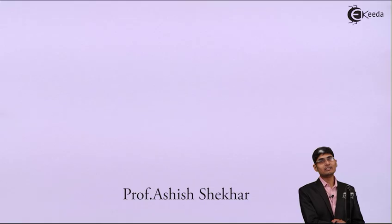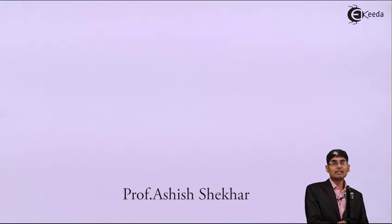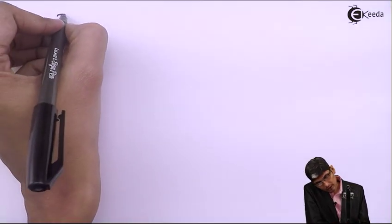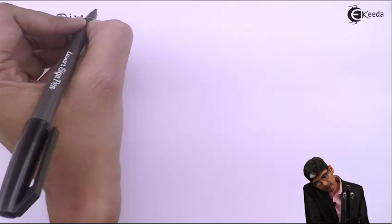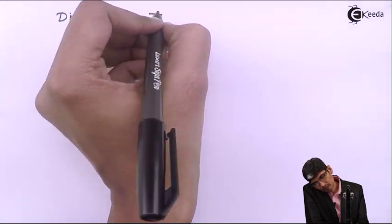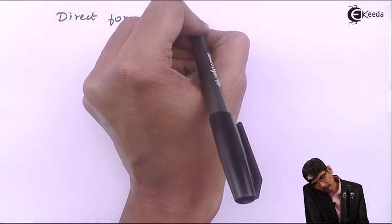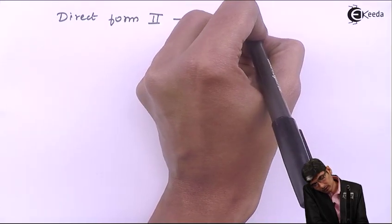Hello friends, let us see another form of IIR structure which we call as Direct Form 2. Today we are going to see what Direct Form 2 means — these are all IIR structures.